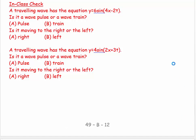So, a traveling wave has an equation six sine four X minus two T. So is this a wave pulse or a wave train? Well, it's a sine curve. And so it's going to be a wave train. It goes on and on and on. And then, is it moving to the right or moving to the left? There's a negative sign there. And so it's moving to the right.